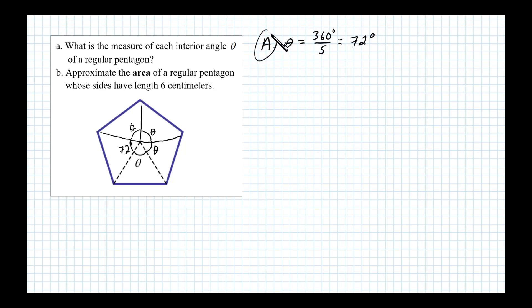Now for part B, they want us to approximate the area of this pentagon. The area of the pentagon - remember we've segmented it into five equal triangles - so that would be five times the area of each individual triangle. And we know the area of a triangle is one half base times height, so this is the formula we're going to use.